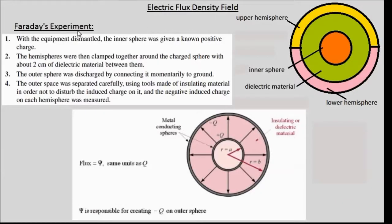Faraday's experiment for studying the electric flux density field has the following setup. There is a sphere of radius A units, which is marked in orange, and there are two hemispherical cups which are shown in yellow color and pink color.